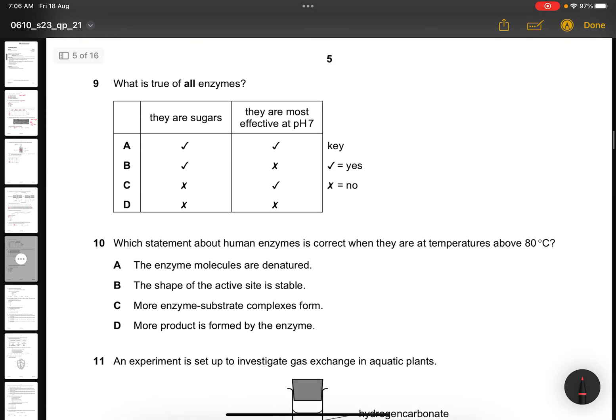Question 9. Which is true for all enzymes? They are not sugars and they are not most effective at pH 7 because there are some enzymes like pepsin and trypsin. They are in acidic and alkaline conditions. So they are both not correct.